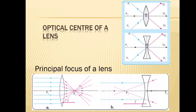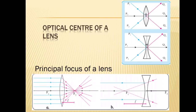We will now see what is principal focus. When light rays parallel to the principal axis are incident on a convex lens, they converge at a point on the principal axis — they meet at a point on the principal axis. This point is called the principal focus of the lens. F1 and F2 are the principal foci of the convex lens.